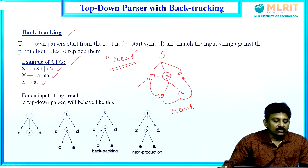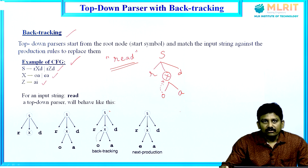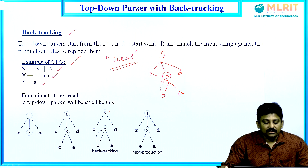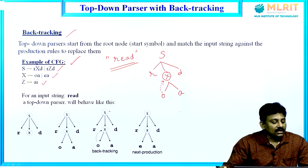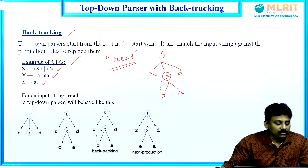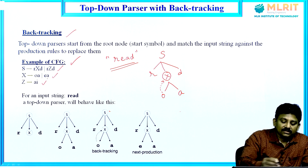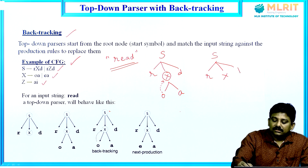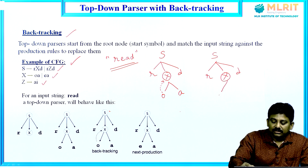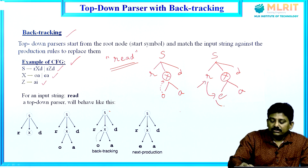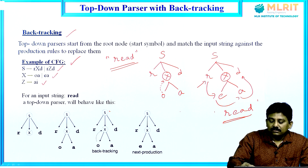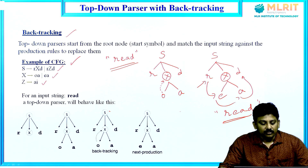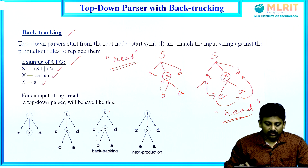At that time we can use backtracking. Backtracking means going back to the previous node. There we can try to use the other rule, that is X derives ea. X is replaced by ea. If you collect the leaf nodes, we get the string 'read'. That is how backtracking works in a top-down parser with backtracking.